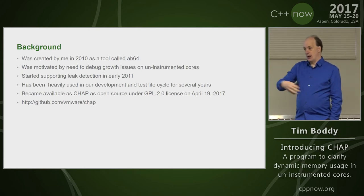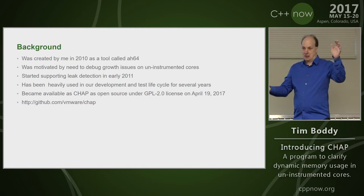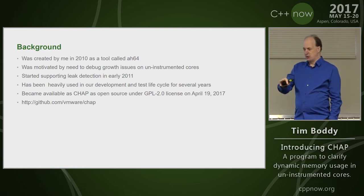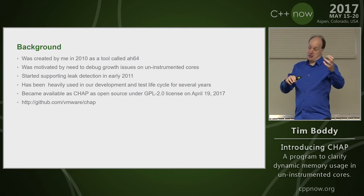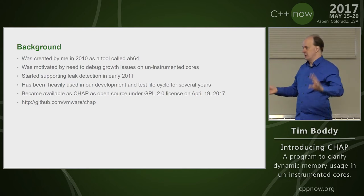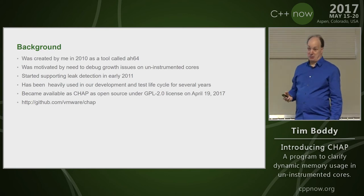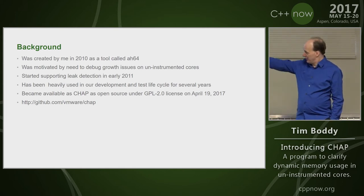Every time a developer checks in, for a wide range of products, something tells them after running standard tests — takes a live core and checks whether they introduced a leak. It's nice because they haven't added so many lines of code. Developers also use it as a sidekick to a debugger: you can ask what is at a location of memory, if the type can be told from a Vtable pointer, the start of the allocation, whether it's leaked or freed. It very recently, like a month ago, became available as CHAP. CHAP is not identical to AH64 for a number of reasons — some legal, some not.